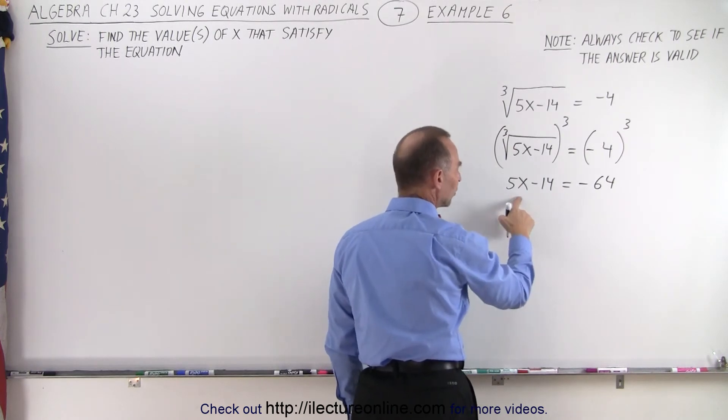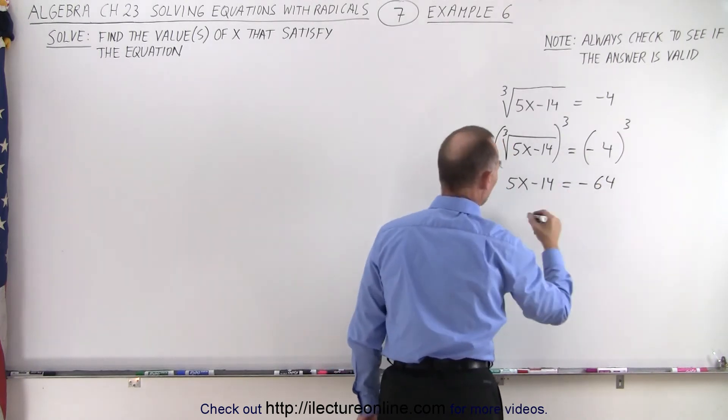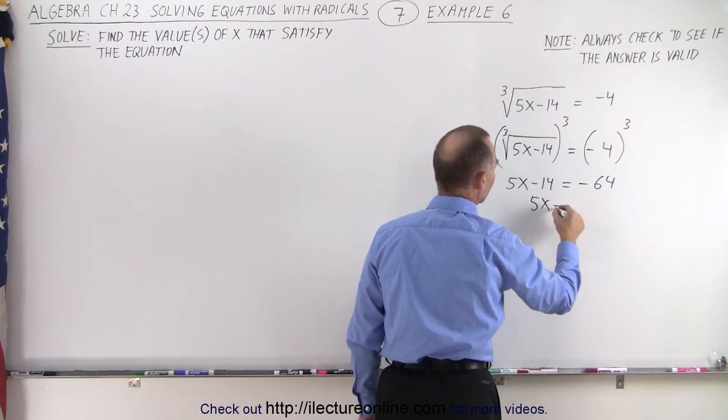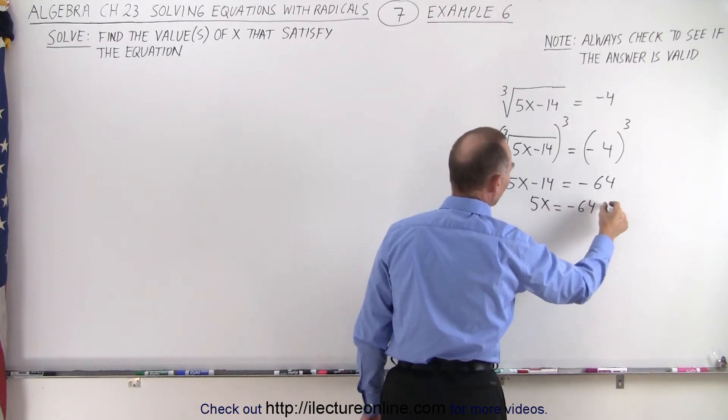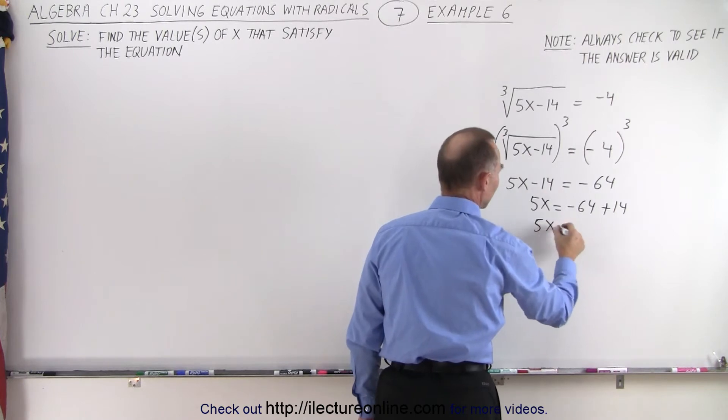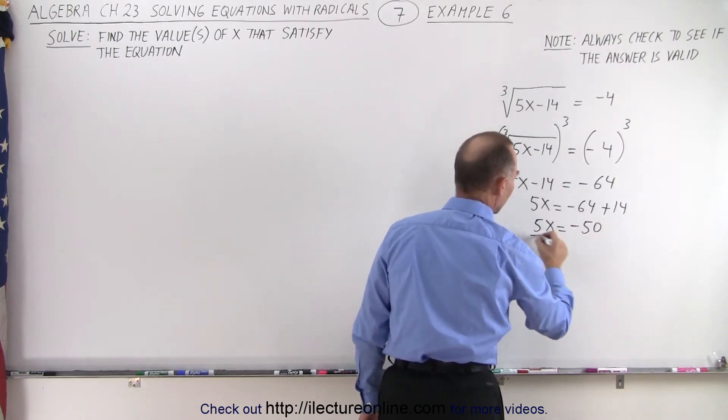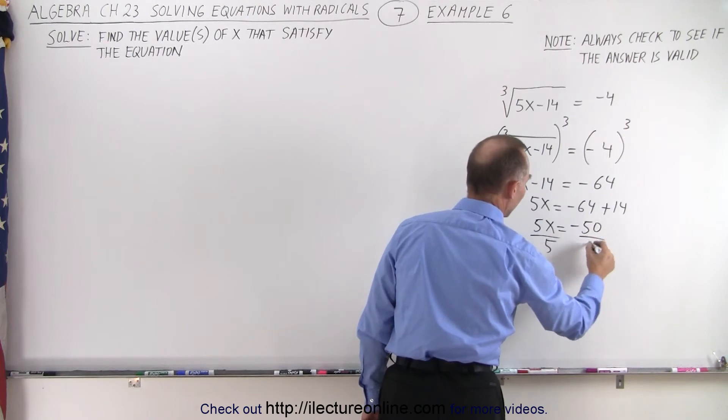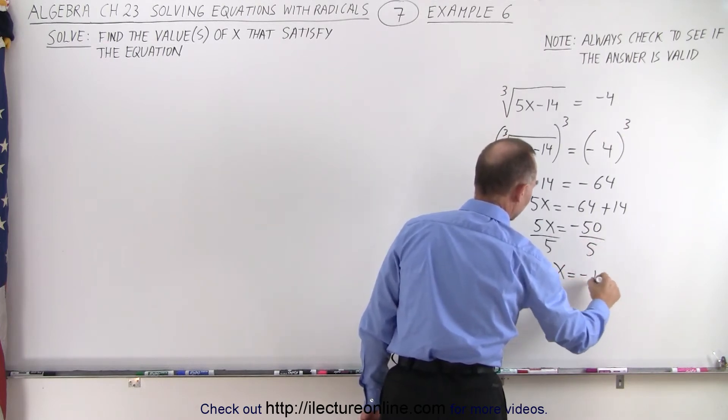Now notice, that's simply a linear equation. We can bring the 14 across. We have 5x is equal to minus 64 plus 14. That means that 5x is equal to minus 50. Divide both sides by 5, and you get x equals negative 10.